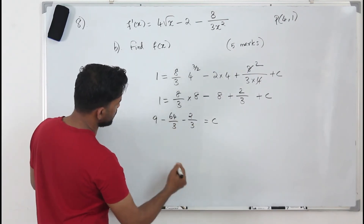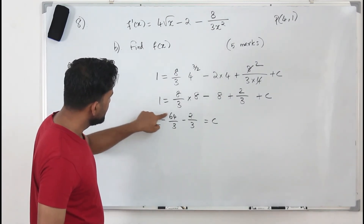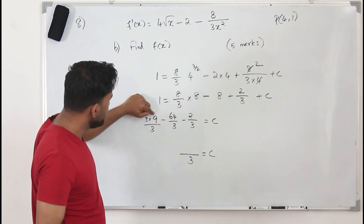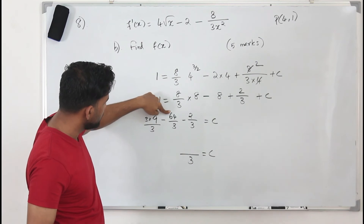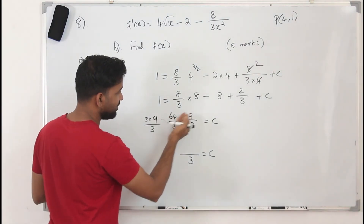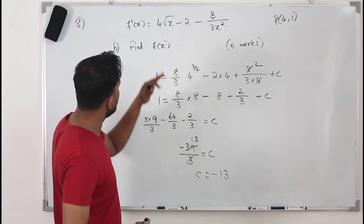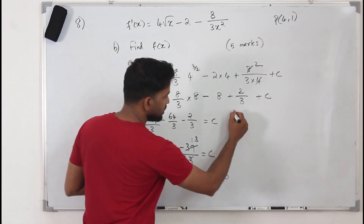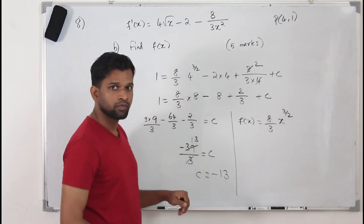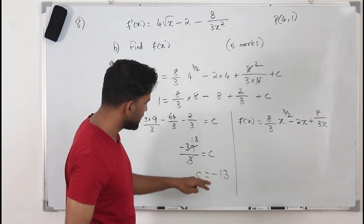Simplifying c: multiply by 3 to combine — 3 times 9 is 27, minus 64, minus 2 gives 27 minus 66, so c equals negative 39 over 3, which is negative 30. Substituting c back, our complete f(x) is: 8 over 3 times x to the power 3/2, minus 2x, plus 8 over 3x, minus 30.